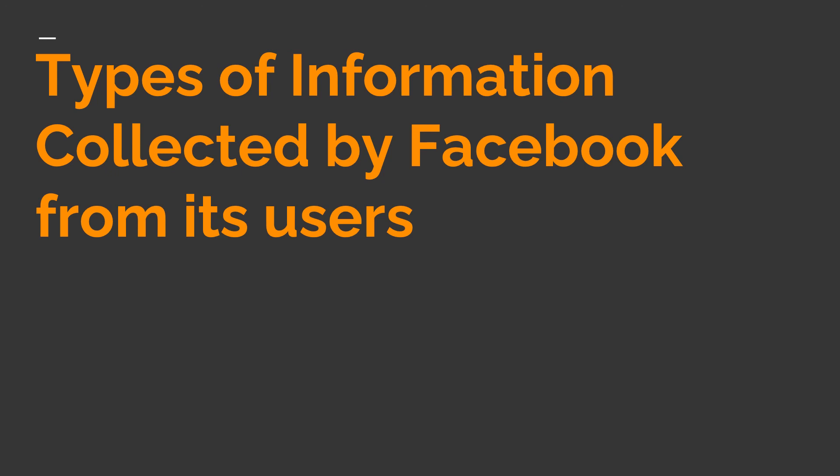The final category is information about how you access Facebook. It collects information about the computer, phone or other devices where you install or access its services — such as device location, the name of your mobile operator or ISP, browser type, mobile phone number, IP address, etc. This is all possible because of data science and machine learning. These technologies play a big role in contributing to the success of companies and helping them provide remarkable features to their users.